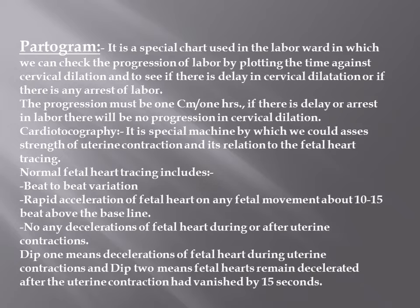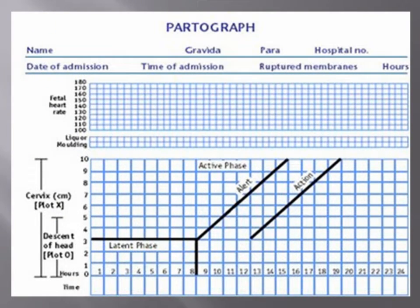The partogram is used to monitor labor progression. The patient is admitted to the hospital, and times of admission and rupture of membranes are recorded. On the chart you can see cervical dilatation from 1 to 10 centimeters on one axis, and hours on the other axis.